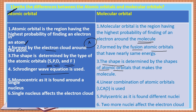In atomic orbitals, the Schrödinger wave equation is used. In molecular orbitals, the Linear Combination of Atomic Orbitals — the LCAO approach — is used for construction of a molecular orbital. Atomic orbital is monocentric, found around a single nucleus. Molecular orbital is polycentric, formed by combining or overlapping two or more nuclei. A single nucleus affects the electron cloud, whereas two or more nuclei affect the electron cloud in a molecular orbital.